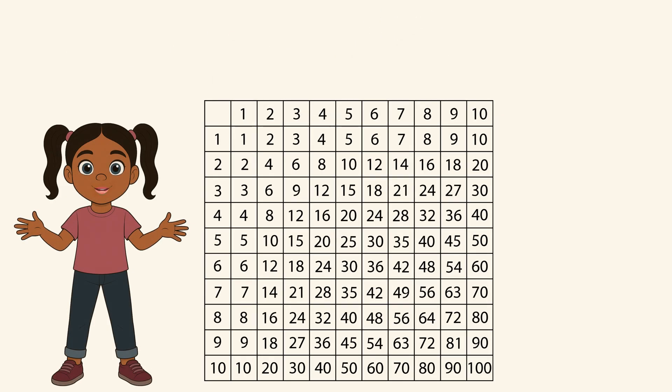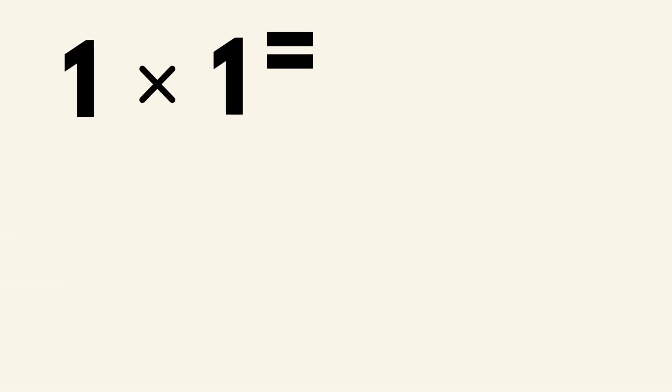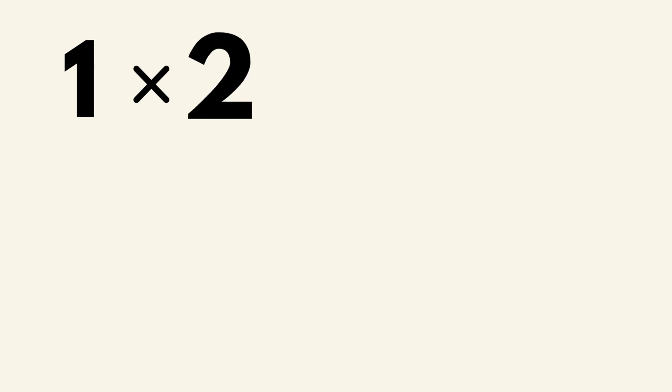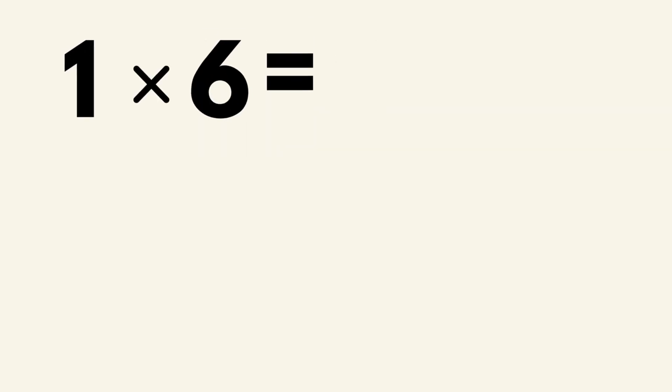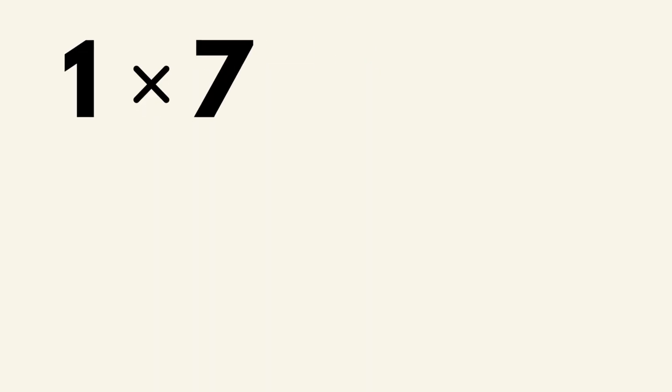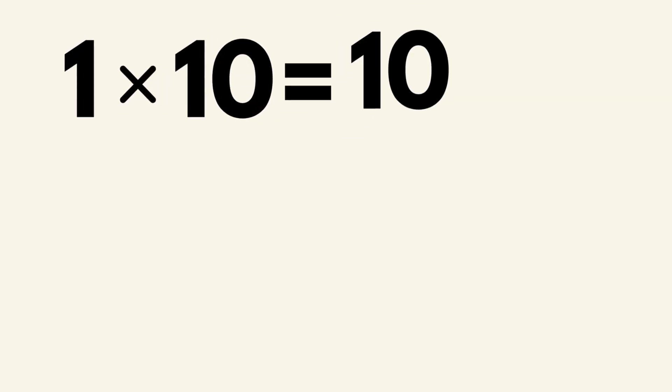Great job, you did awesome! But can you go any faster? One times one equals one. One times two equals two. One times three equals three. One times four equals four. One times five equals five. One times six equals six. One times seven equals seven. One times eight equals eight. One times nine equals nine. One times ten equals ten.